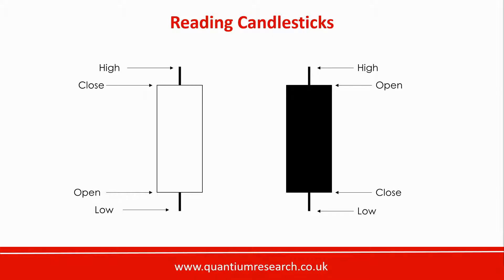When the close is higher than the open, the real body is white or unfilled. When the close is lower than the open, the real body is black or filled in. Beyond the real body, you have a thinner line marking the highest and lowest prices recorded — commonly referred to as tails, shadows, or wicks. It's worth noting that not all candlesticks have shadows: if a white candle closes at its highest price it will have no upper shadow, and if it also opened at its lowest price it would have no lower shadow either.